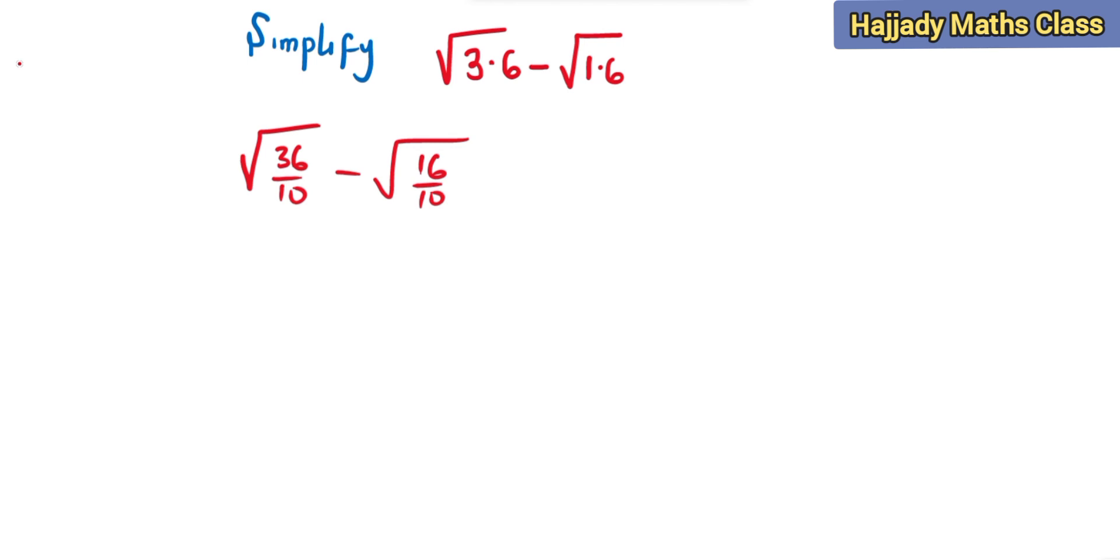From the law of surds that we've treated in our previous class, we know that this is the same thing as saying root 36 over root 10 minus root 16 over root 10.